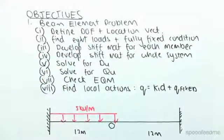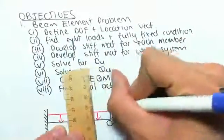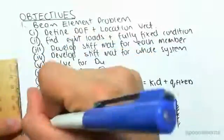Let's first just define our degree of freedom and location vector. So we know that for a beam element we have vertical, vertical, vertical, and moments.